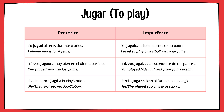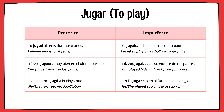Nosotros estábamos anonadados. Vosotros estabais aquí, no. Ellos estaban diciendo groserías. Next verb is jugar, which means 'to play.' Yo jugué al tenis durante ocho años. Tú jugaste muy bien en el último partido. Ella nunca jugó a la PlayStation. Yo jugaba al baloncesto con tu padre. Tú jugabas a esconderte de tus padres. Él jugaba bien al fútbol en el colegio.